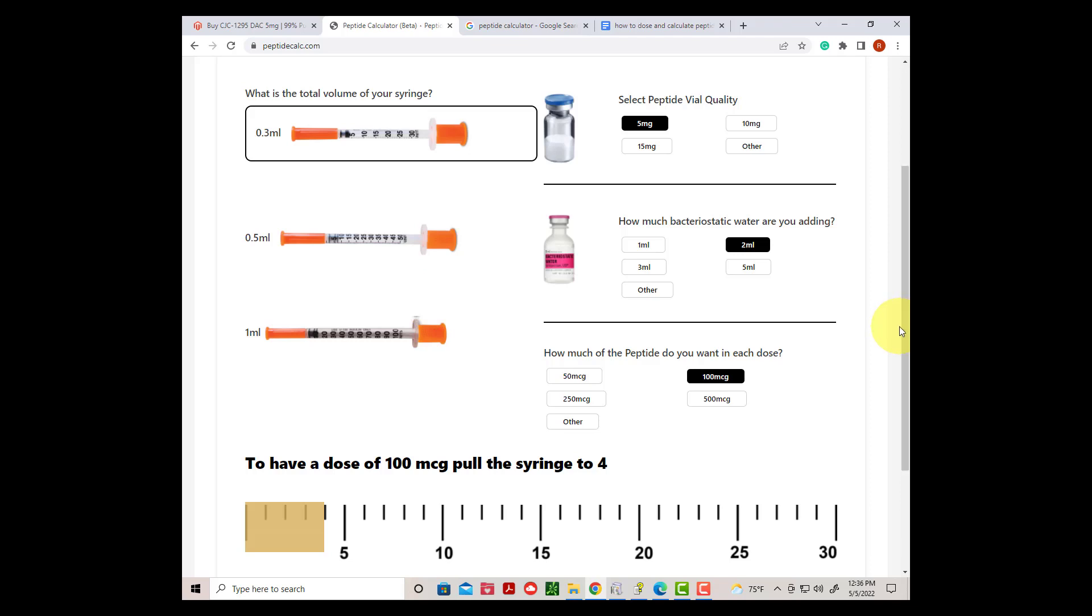The next step is to determine how many milliliters of water we want to inject into the peptide vial. In this case we want to change the amount to two milliliters instead of the one milliliter which is standard to make it easier to mix and measure. Sometimes the vial is small and putting a large amount of water into the vial with the peptide is impossible.